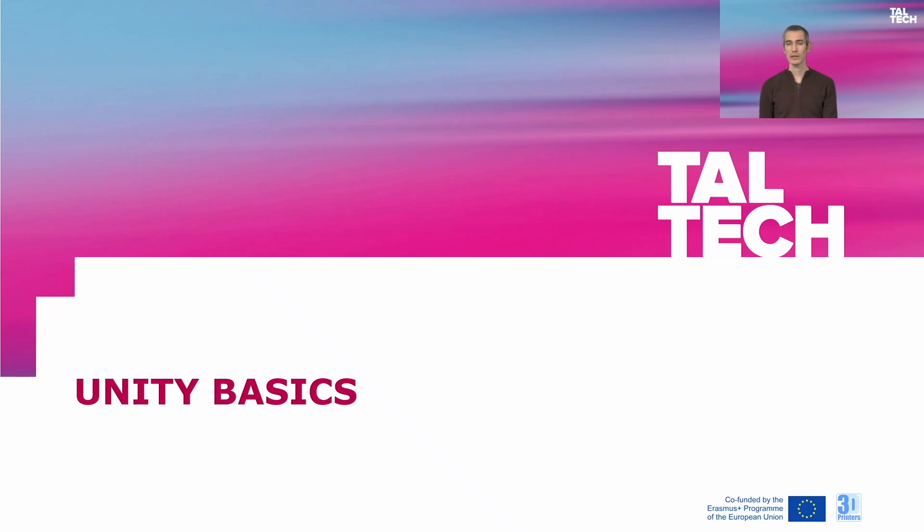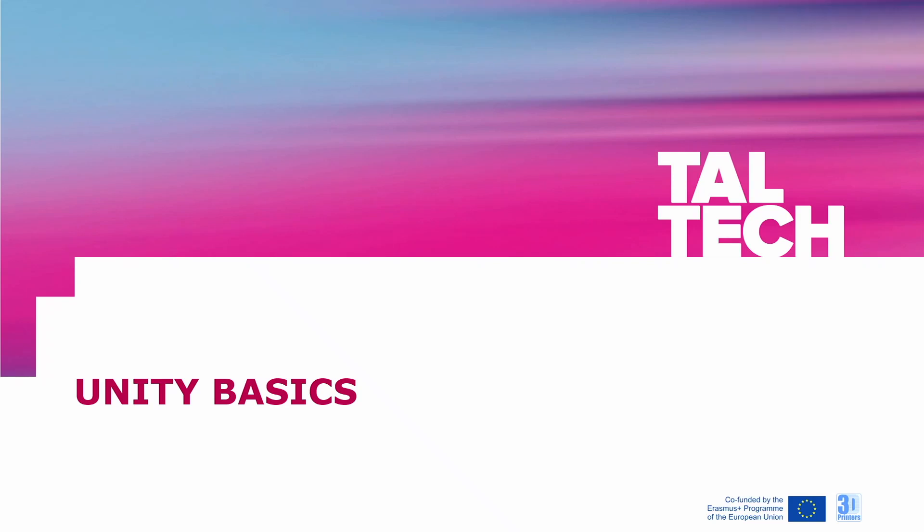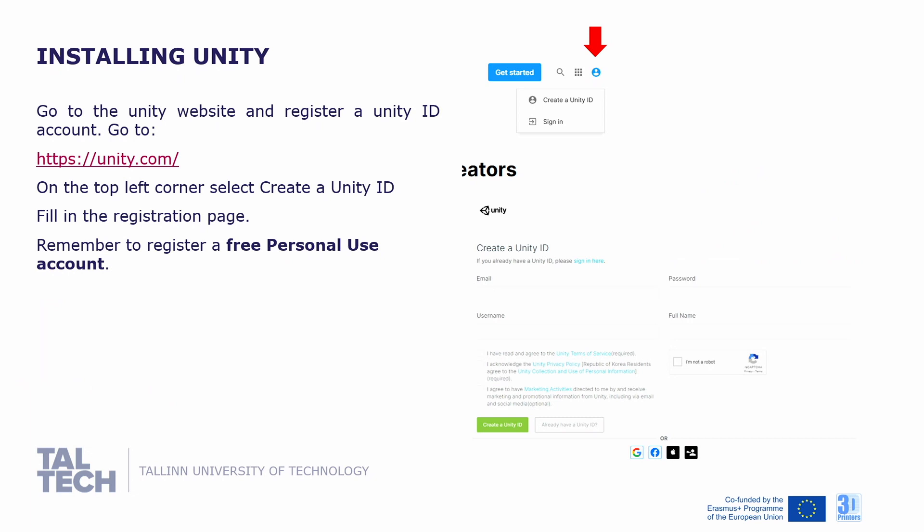Let's install Unity first and learn how to use it. Before starting, you will have to go to the Unity website www.unity.com and register a Unity ID account. On the top left corner, select create a Unity ID, fill in the registration page, and remember to register a free personal use account.